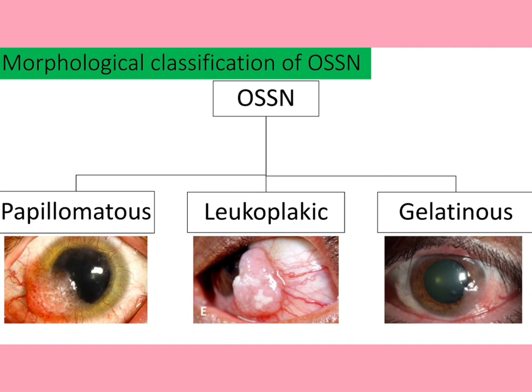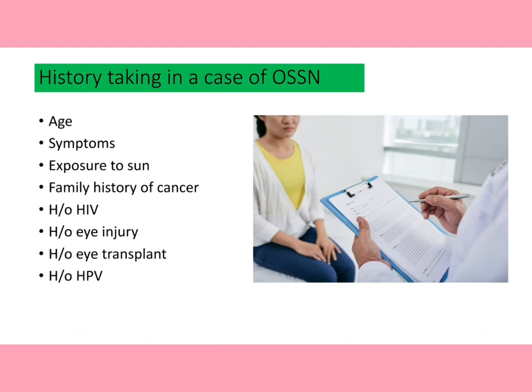In history taking, important areas include: patient age, presenting symptoms, sun exposure and occupation, family history of cancer, history of HIV, previous eye injury, previous eye transplant surgery, and history of human papillomavirus infection — as all these are risk factors for developing OSSN.